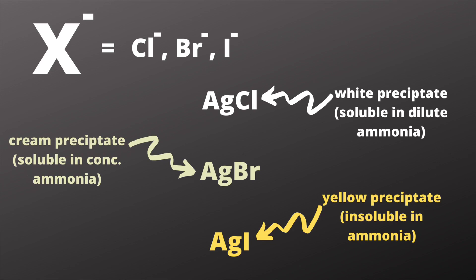Now these precipitates of silver halides are actually soluble, some of them, in different concentrations of ammonia. So aside from the fact they're different colors, we can do a further chemical test that should distinguish between them.